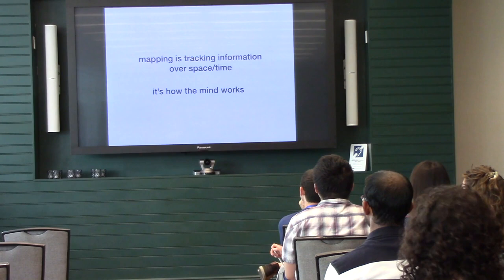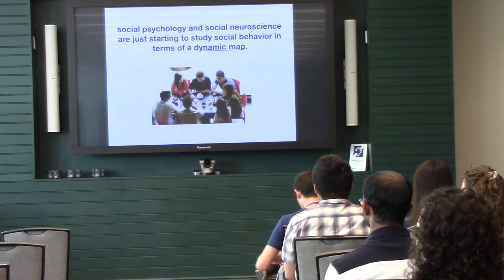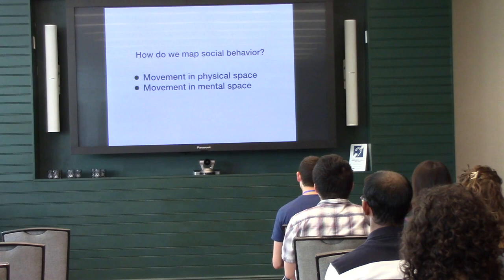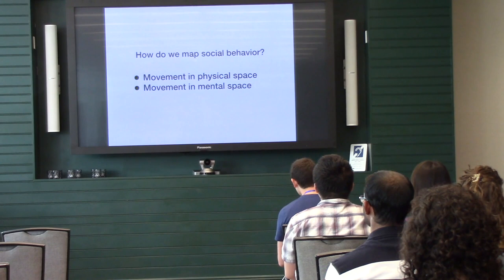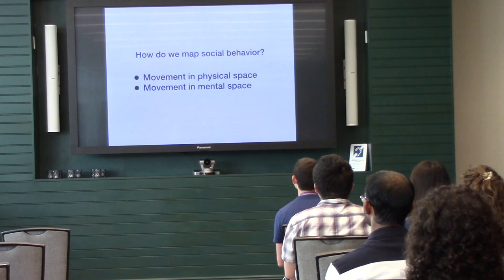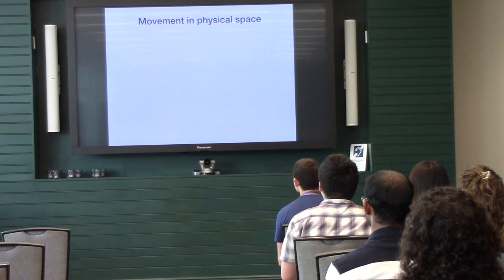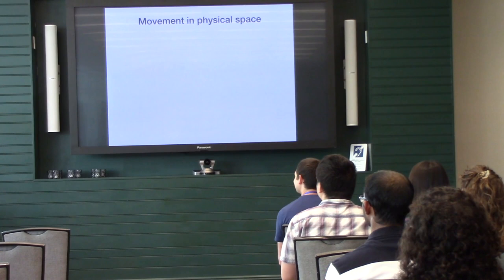So my domain is the social world. I'm going to show you how maps play out in that domain. Social psychology and social neuroscience are just starting to study behavior in this way, in the way that looks more like a dynamic map. So how might we map social behavior? I think you can think of people's social behavior in terms of physical space, and you can think of it in terms of how we travel in space together in our heads. I'm going to talk to you about some work I've been doing for both of those areas.